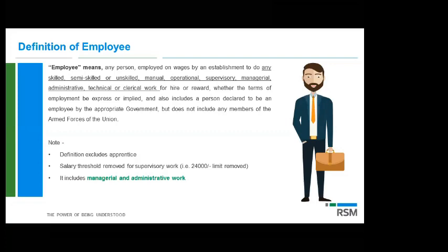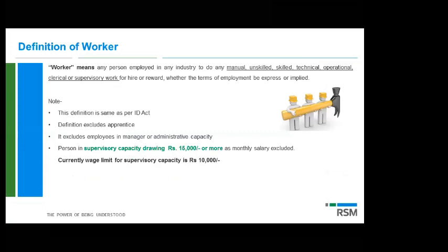The definition excludes specifically an apprentice, so any trainee will not be part of the definition of 'employee'. The salary threshold for supervisory work has been removed — there was a limit of 24,000, so any supervisor drawing above 24,000 was not covered under the Payment of Wages Act. Now that limit has been removed. Also, anyone who did managerial or administrative work was excluded — now everyone is part of the new code.